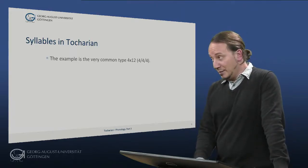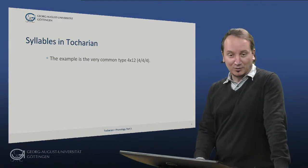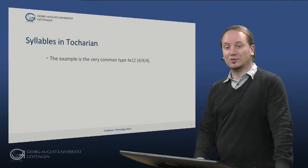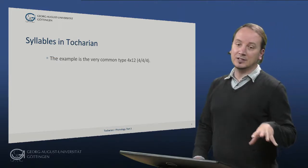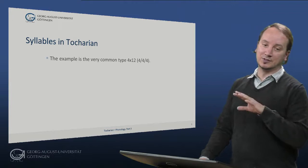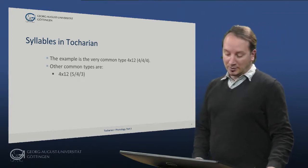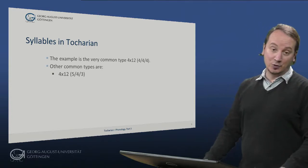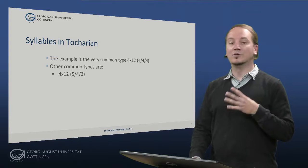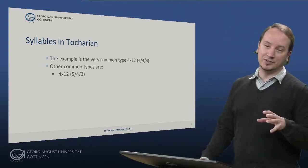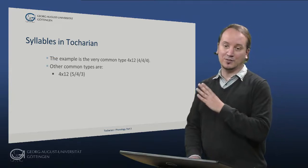The example we just saw is a very common type of 4×12, 4, 4, 4 meaning 4 padas, each 12 syllables and a division in cola of 4 syllables each. Other common types are 4×12, 5, 4, 3 meaning 4 padas, each 12 syllables and a division in cola of 5, 4, and 3 syllables.